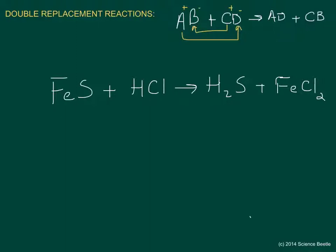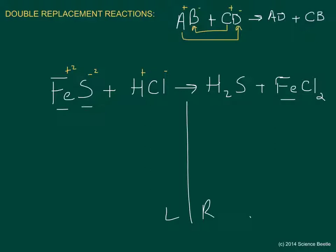Let's identify the parts: iron is positive, sulfur is minus, hydrogen is positive, and chlorine has a minus one charge. The sulfur has a minus two charge, so iron in this case has a plus two charge. What happens is iron combines with chlorine from hydrochloric acid, and hydrogen binds with sulfur, forming the compounds on the right. We divide into left and right sides. Iron: one on the left, one on the right — balanced. Sulfur: one on the left, one on the right — balanced.